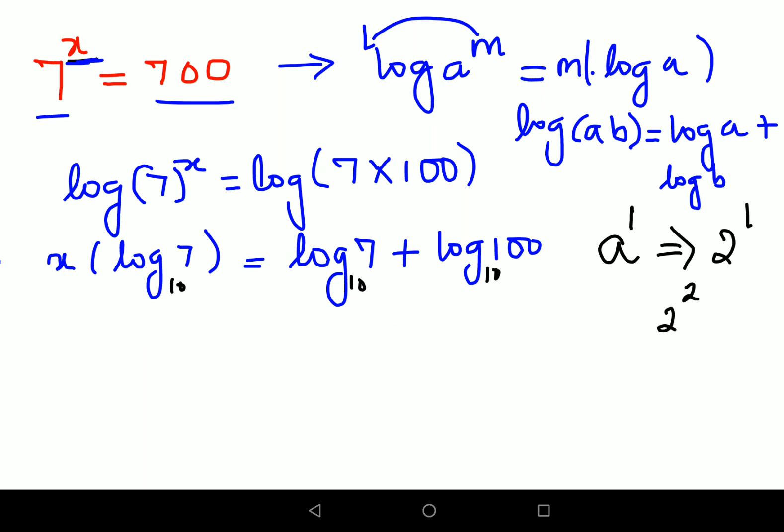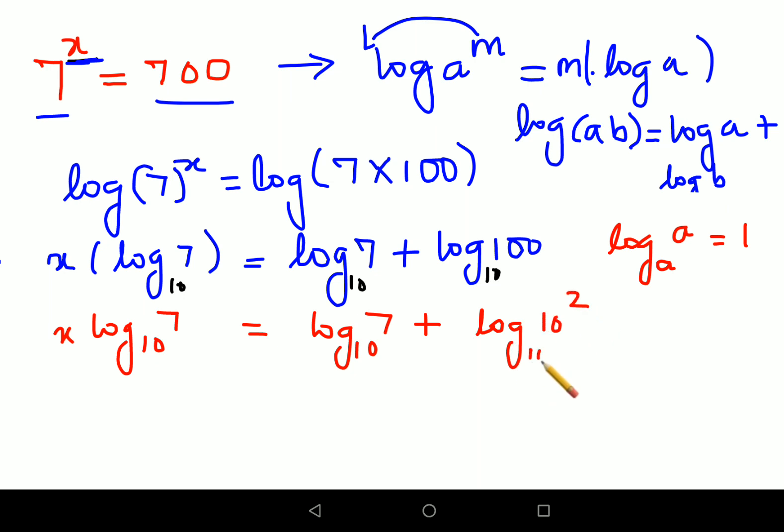There is another rule of log which says that whenever you have log of any number to the same base, the answer becomes 1. So I'll write log of 7 to the base 10 equals log of 7 to the base 10 plus, this 100 can be written as log of 10 squared to the base 10. Here for your understanding I'm putting the base; actually if you don't put the base, that is also absolutely fine.